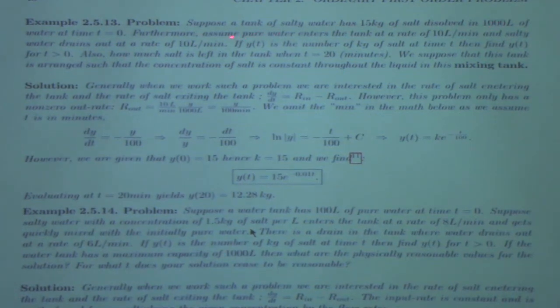So you had a tank of brine, 15 kilograms of salt dissolved in 1,000 liters at time zero. And then I'm going to dump pure water at 10 liters per minute. And then the salty water drains out also at a rate of 10 liters per minute. So the volume of water is fixed at 1,000 liters. Suppose that this tank is arranged such that the concentration of salt is constant throughout, which means there's some big fan in it, and it's like mixing it. So the salt gets mixed. So you're not having different saltiness in different parts.